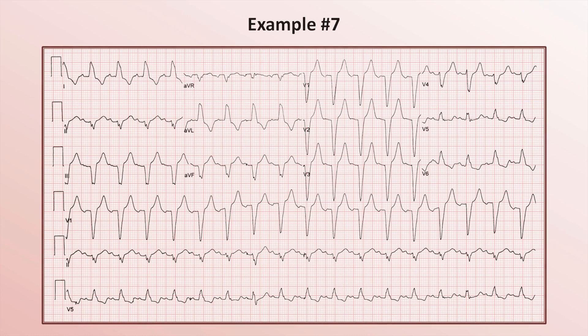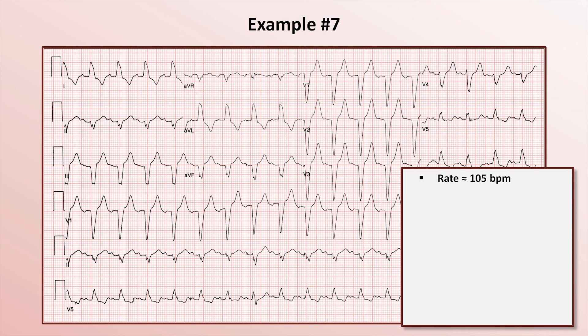Example 7. There are just under 3 large boxes between successive QRS complexes, so the rate is just over 100. There are 17.5 complexes across this strip, for a more precise rate estimate of 105.